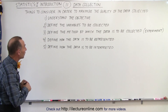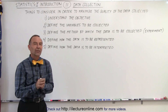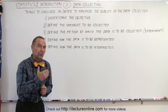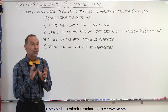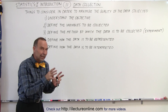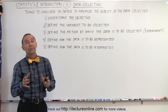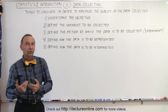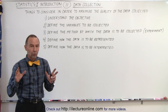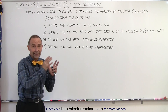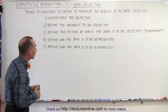We have five points on the board. The first one is understand the objective — what is it that you're trying to accomplish with this exercise? That is very important because the type of data you're going to collect completely depends upon what your objective is, what you're trying to show, what you're trying to prove. Make sure that the collected data does indeed match your objective in the exercise.